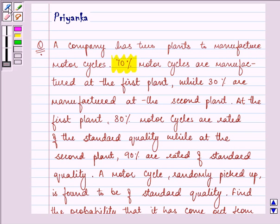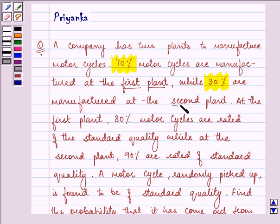70% of motorcycles are manufactured at the first plant, while 30% are manufactured at the second plant. At the first plant, 80% of motorcycles are rated of standard quality, while at the second plant, 90% are rated of standard quality.